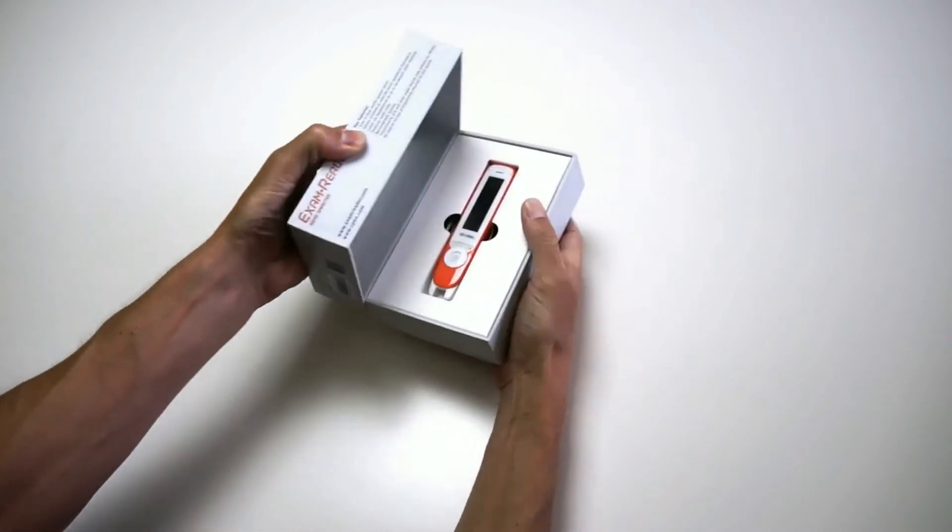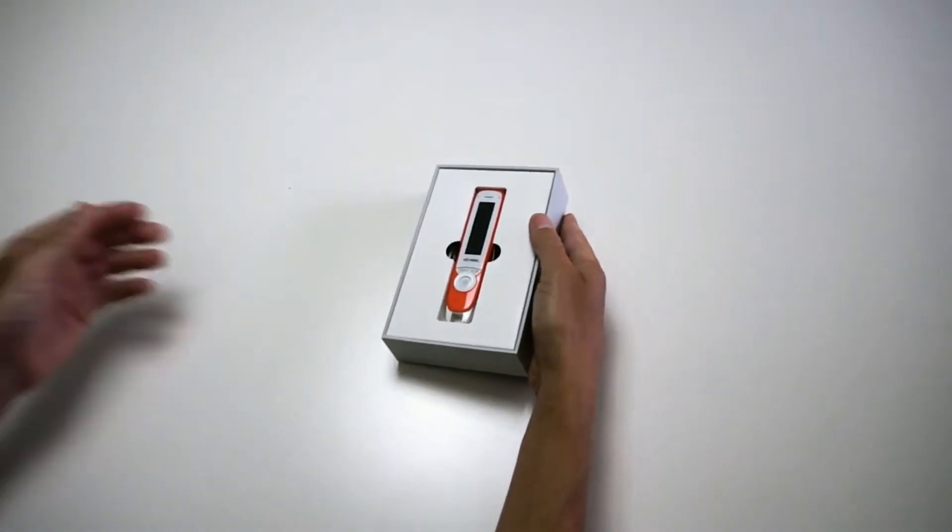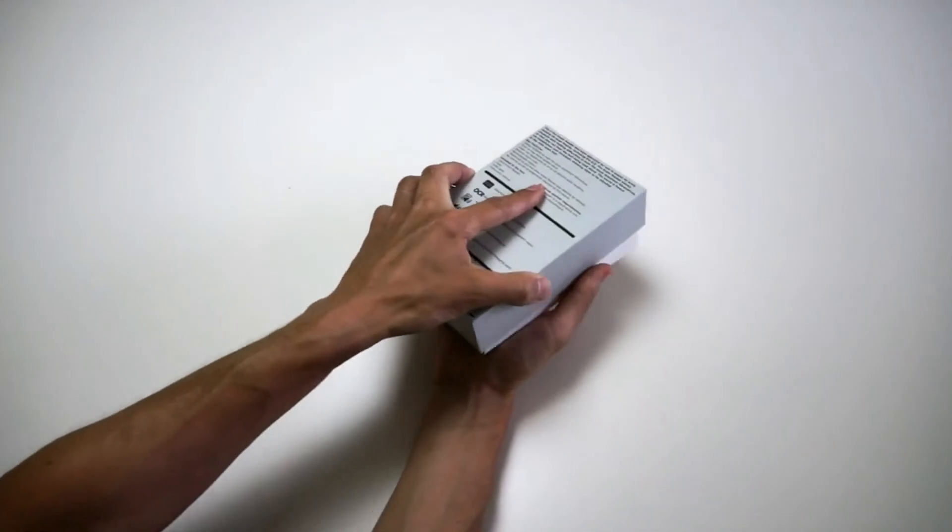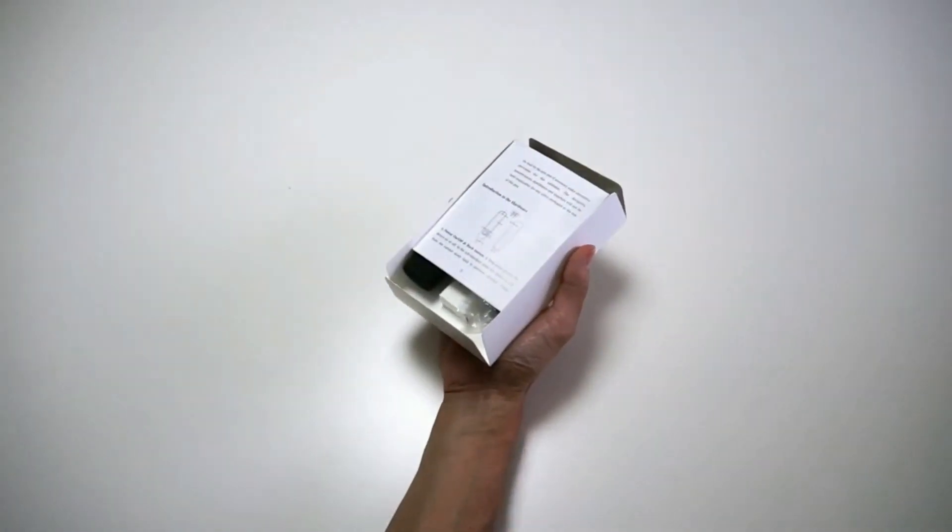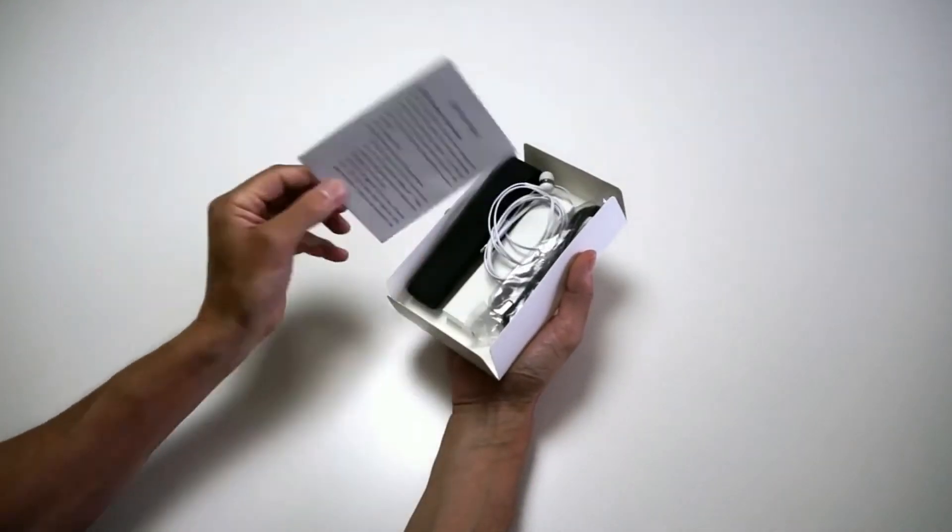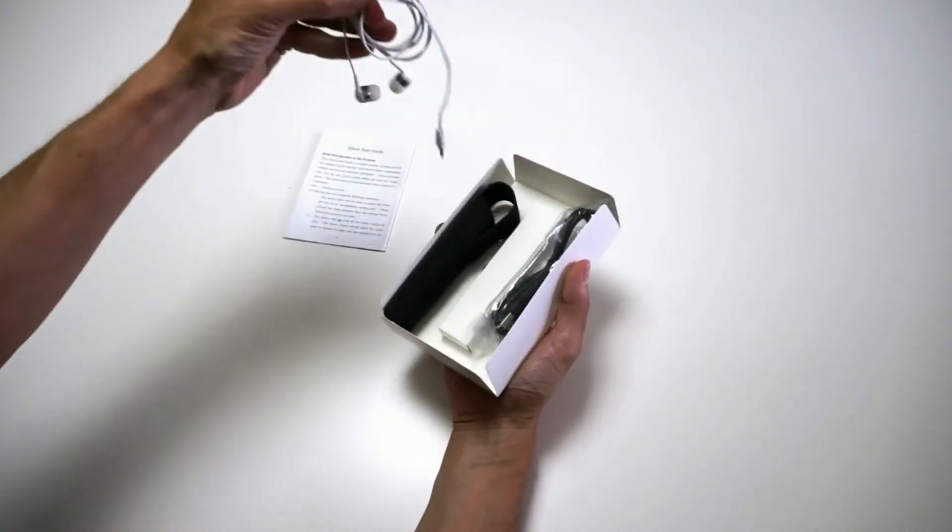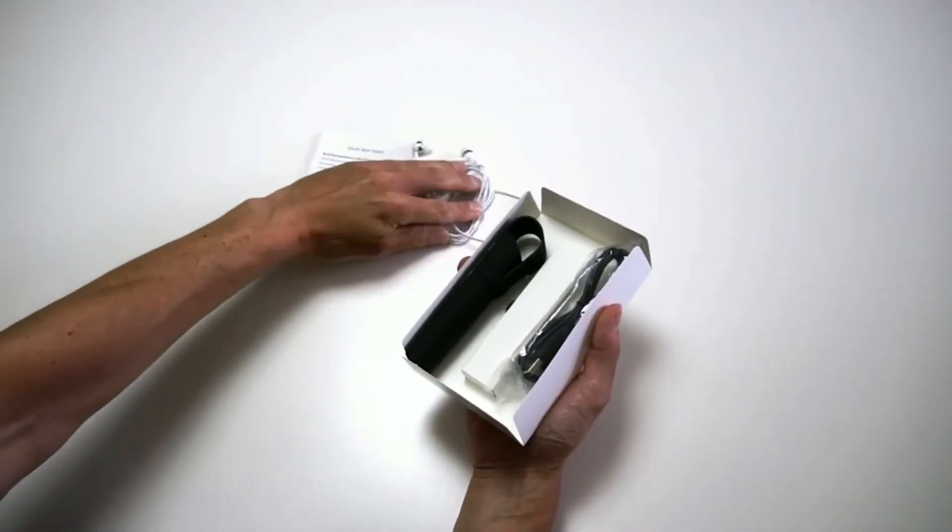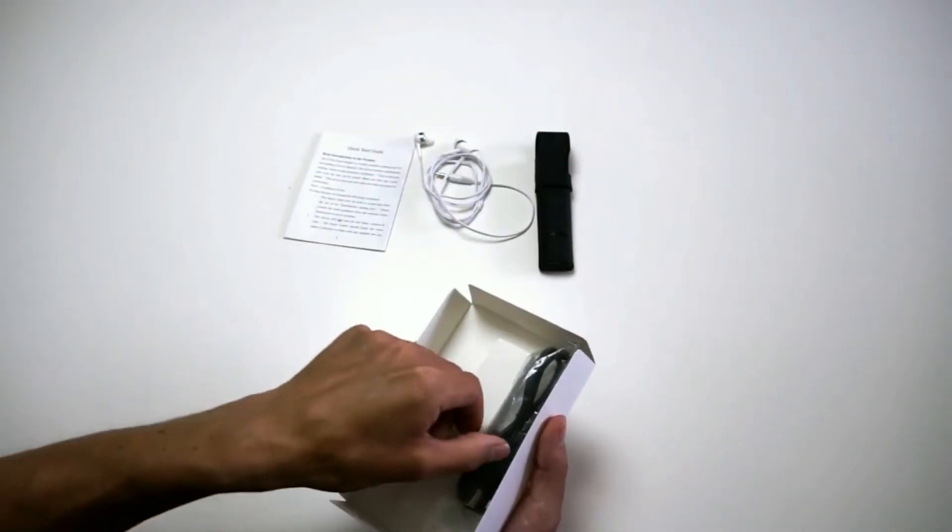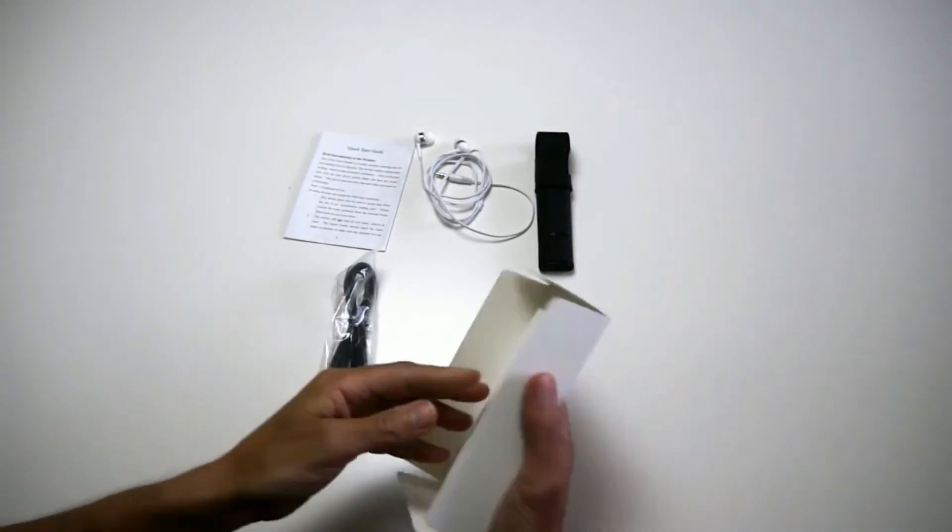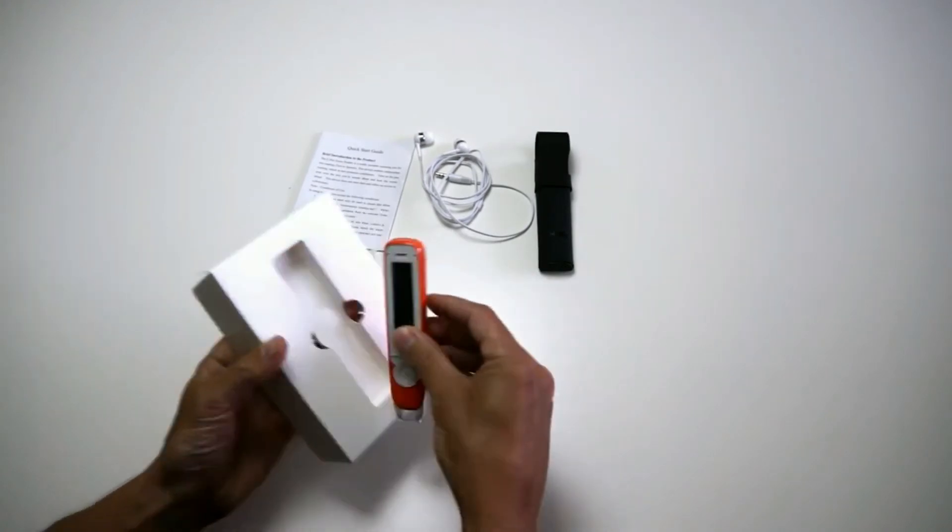Let's have a look at Exam Reader. This is what's included in the box: a user guide, earphones, a holder, a USB cable, and the Exam Reader itself.